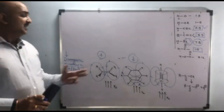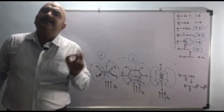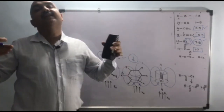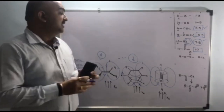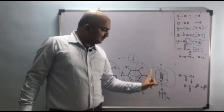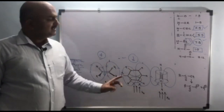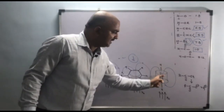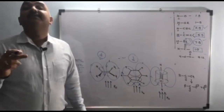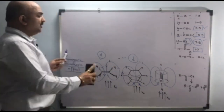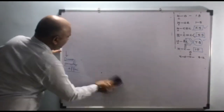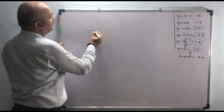Due to the orientation of pi electrons, the induced magnetic field and external magnetic field can either reinforce or oppose each other. In the case of acetylene, the external magnetic field causes the pi electrons to circulate in such a way that the induced magnetic field is in the opposite direction to the external field at the position of the acetylenic proton — resulting in shielding. This is the diamagnetic anisotropic effect.